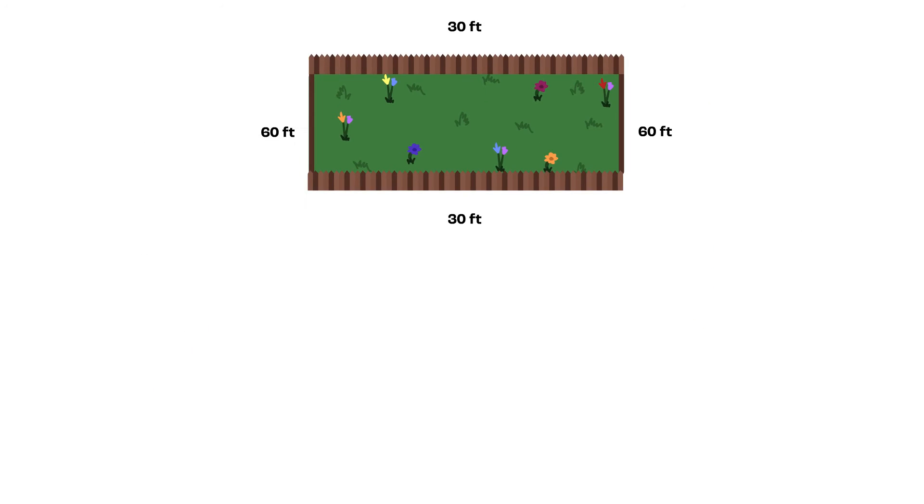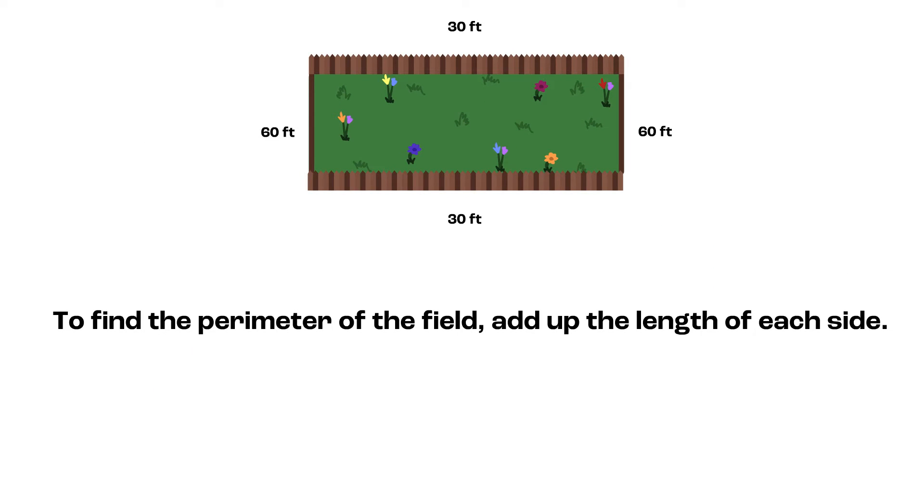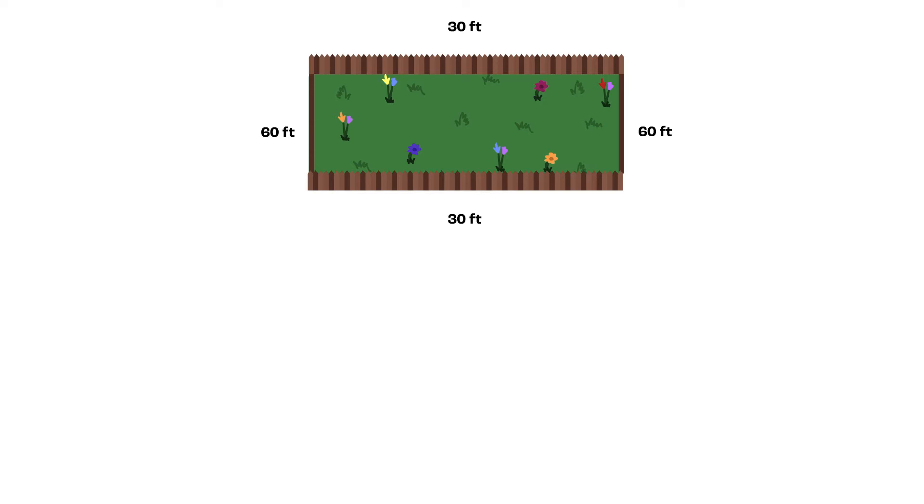All we have to do to find the perimeter of the field is to add up the length of each side. So, let's build an equation. Since two sides of the field have a length of 30 feet, in our equation we will put 30 plus 30. And the other two sides have a length of 60 feet, so we will add in our equation 60 plus 60. When we add this together to find our perimeter, we have 30 plus 30 plus 60 plus 60.